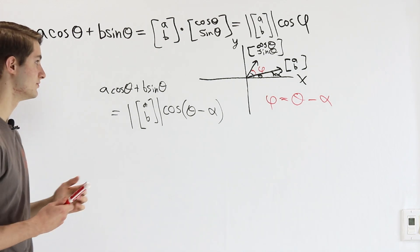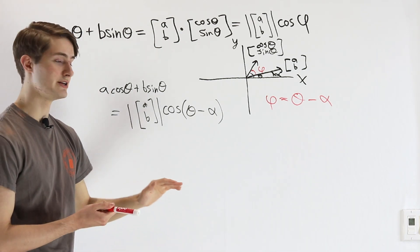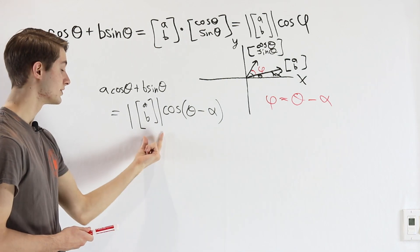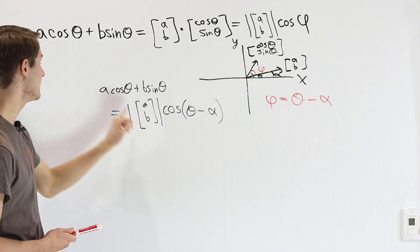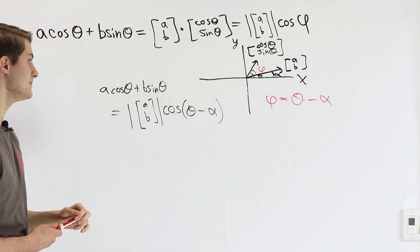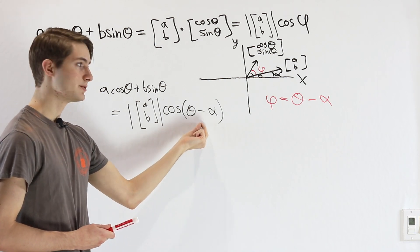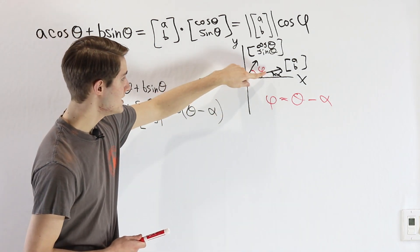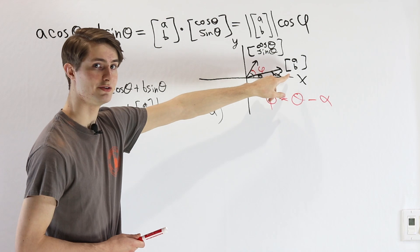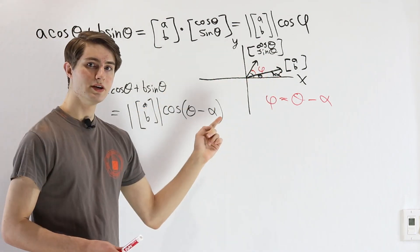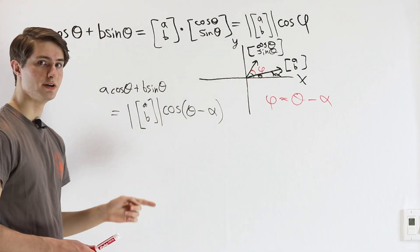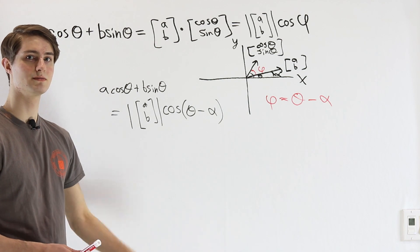That makes all the numerical results very easy to derive without any funny algebra. We know that the coefficient of our cosine is just the magnitude of the vector [A, B], and this angle α that we're subtracting off is just the angle off the x-axis of our vector [A, B]. So that's how we derive the harmonic addition theorem in terms of dot products.